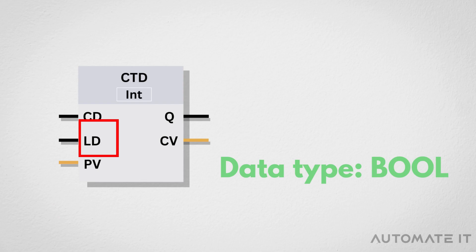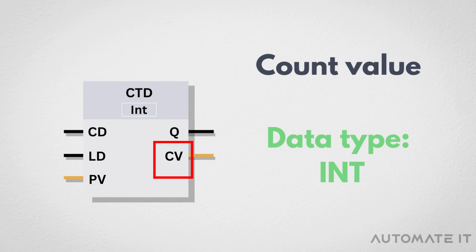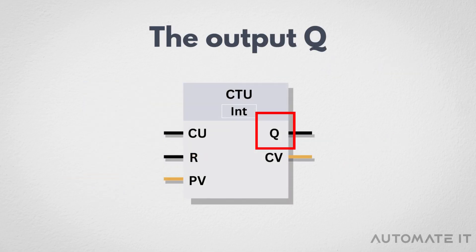LD: this input resets the counter value back to the PV value. CV: this output represents the current value of the counter. When the counter value reaches 0, the Q output becomes true.